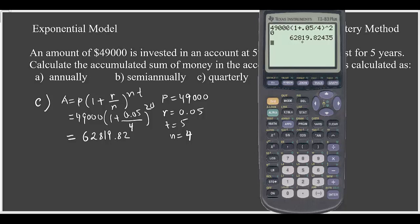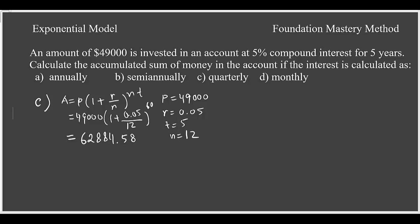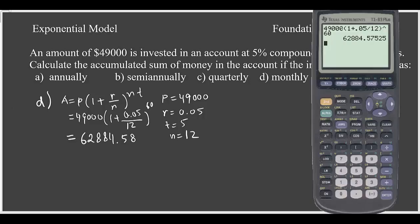So for monthly compounding, our n is 12 because we have 12 months in a year. Now when you plug n equals 12, and then 12 times 5 is 60, put it in the calculator: 49,000(1 + 0.05/12)^60. That gives you $62,884.58 rounded to two decimal places. Now you can compare all these results. And we are done, thank you.